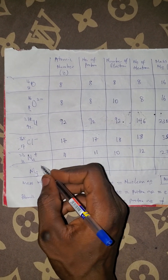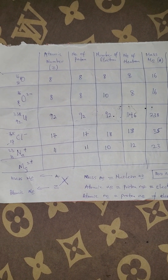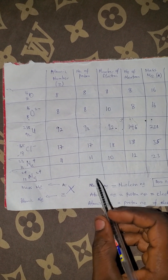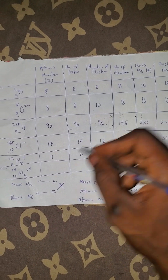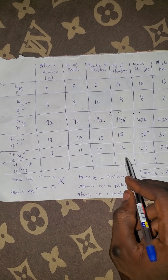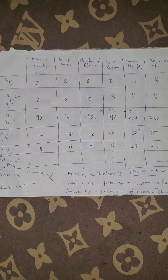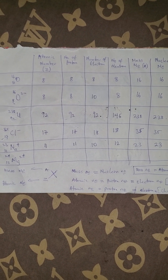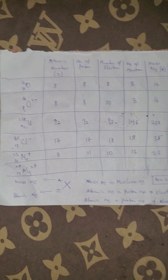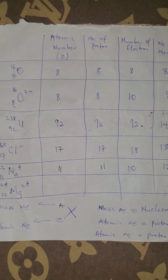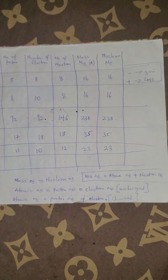Now for a practice question at the comment section: if you have magnesium with a 2-plus charge, Mg-24, with atomic number 12 and mass number 24, let me have your answer in the format: atomic number, proton number, electron number, neutron number, mass number, nuclear number. Leave your answers in the comments. Thank you very much — like, comment, and subscribe. My name is Blessing, popularly known as General David. God bless you.